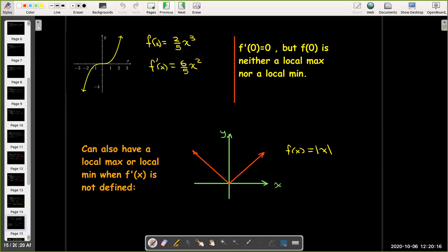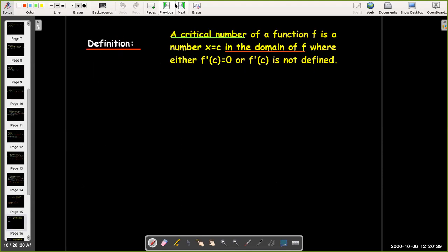And then remember Fermat's theorem says that f'(c) has to exist. Well think about the absolute value function. With the absolute value function f'(0) does not exist, but 0 is a local min and also an absolute min.